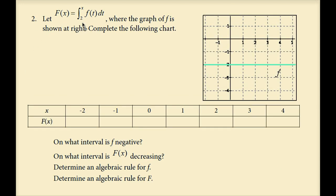Let uppercase F of x equal the integral from 2 to x of lowercase f of t dt, where the graph of f is shown at right. Complete the following chart. The lower endpoint of integration is 2, so that's our starting point. When going backwards we use the opposite sign of the area; when going forwards we use the actual sign. F of negative 2: from 2 to negative 2 is a rectangle with width 4 and height 2, area negative 8. Since we're going backwards, F of negative 2 is positive 8.